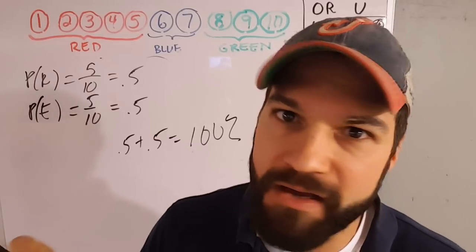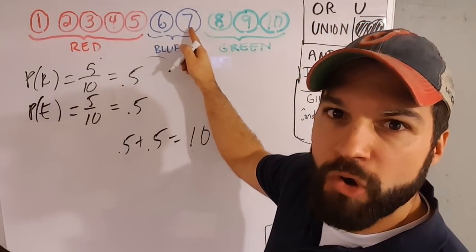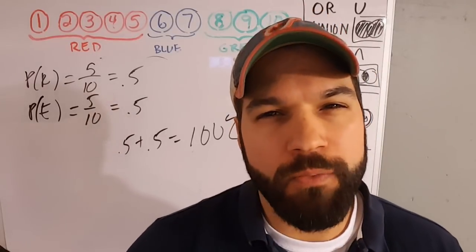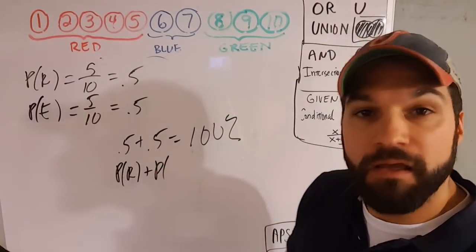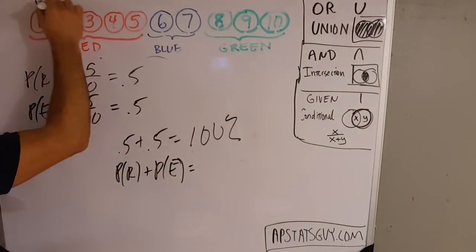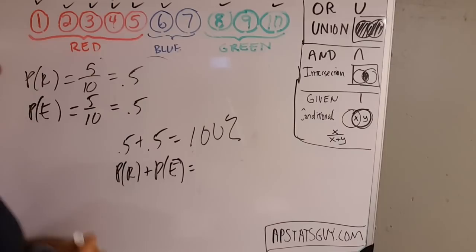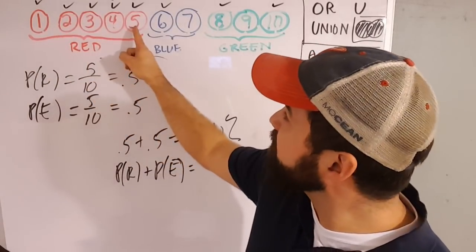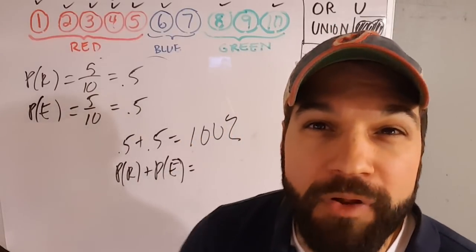But if you look at the chips, you notice they're not all red or even — there are some in there that are neither red nor even. Notice what we did when we added 0.5 plus 0.5: we added the probability of red plus the probability of even. If I check off the reds first, then the evens, a couple of these guys I checked off twice — I double counted them to get my 10 out of 10, my 100%. So I double counted a couple.